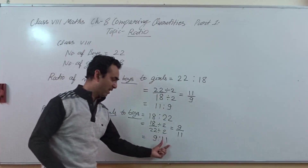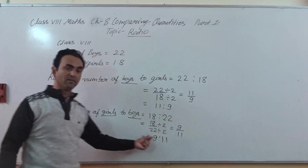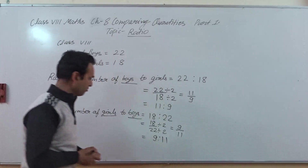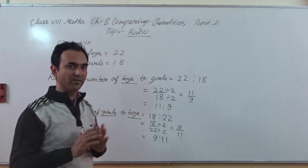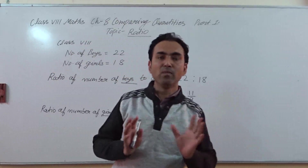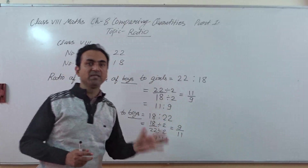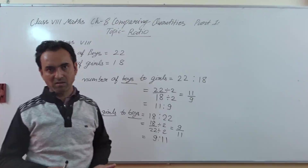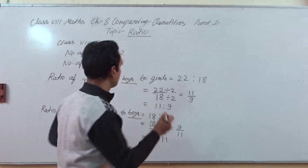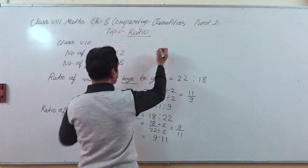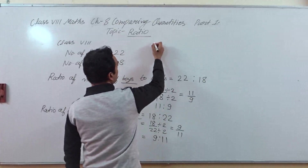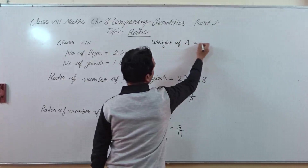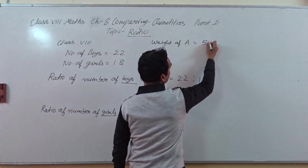It means if there are 11 boys, then the number of girls is 9. So this is called ratio — it is another way of comparing the quantity of two objects. Now we want to compare: suppose the weight of object A is 50 kg.